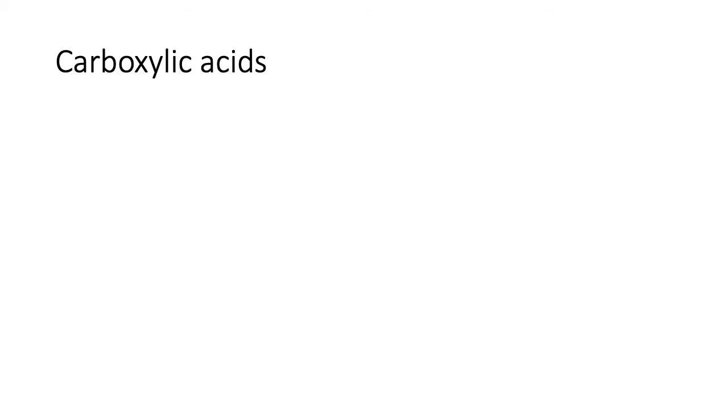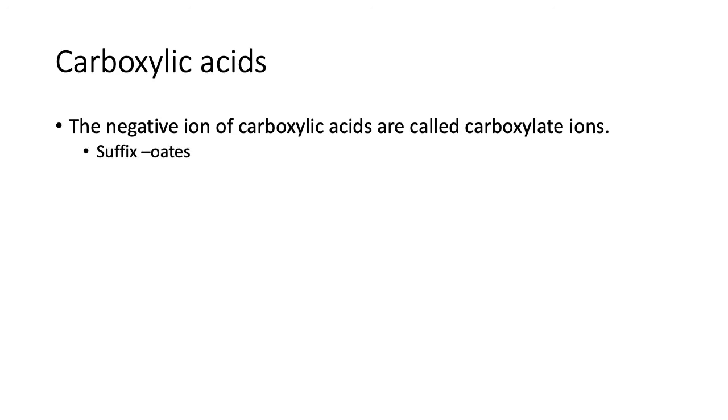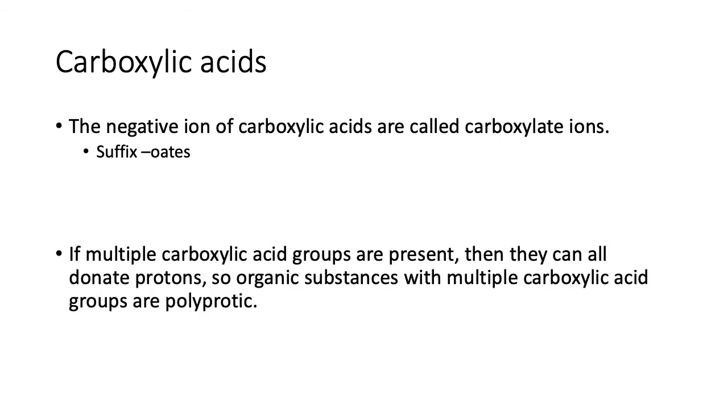The negative ion of carboxylic acids are called carboxylate ions, with a suffix of -oate. If I did that propanoic acid, this ion that it forms is the propanoate ion - propan because it's three carbons, -oate. Not to get confused with the alkoxide ions from the reduction of alcohols.